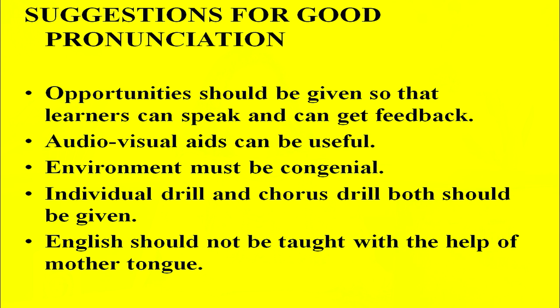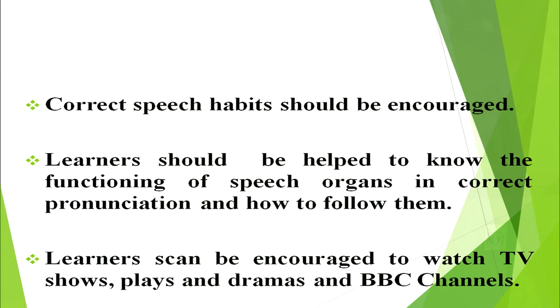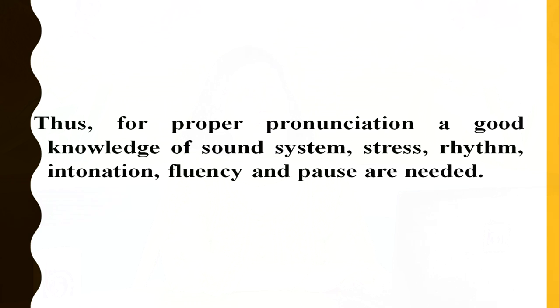Now here are some suggestions for good pronunciation — what we should do to improve it. First, opportunities should be given so that learners can speak and get feedback. Second, audio-visual aids can be useful. Third, the environment must be congenial. Fourth, both individual drill and chorus drill should be given. Fifth, English should not be taught with the help of the mother tongue. Sixth, correct speech habits should be encouraged. Learners should be helped to know the functioning of speech organs in correct pronunciation. Learners can also be encouraged to watch TV shows, plays, dramas and BBC channels. Thus, for proper pronunciation, a good knowledge of sound system, stress, rhythm, intonation, fluency and pause are needed.